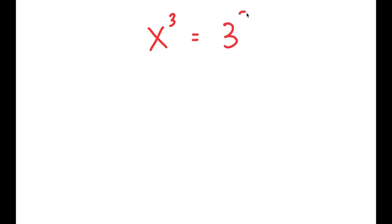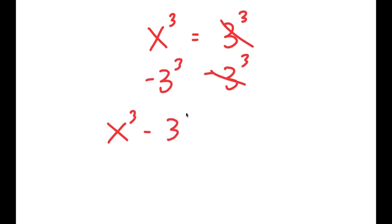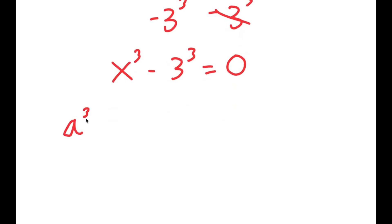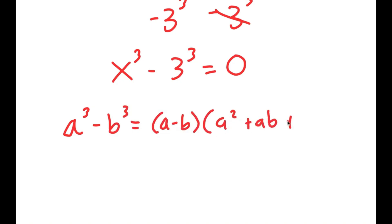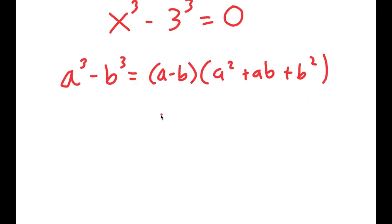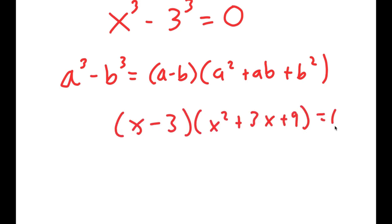In this problem, I'm solving x to the power of 3 equals 3 to the power of 3. I start by subtracting 3 to the power of 3 on both sides, giving x to the power of 3 minus 3 to the power of 3 equals 0. Using the difference of cubes formula — a cubed minus b cubed equals a minus b times a squared plus ab plus b squared — this turns into x minus 3 times x squared plus 3x plus 9 equals 0.